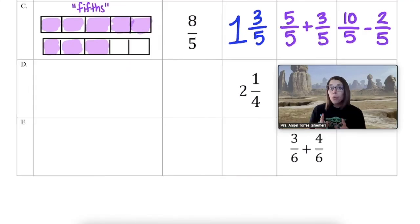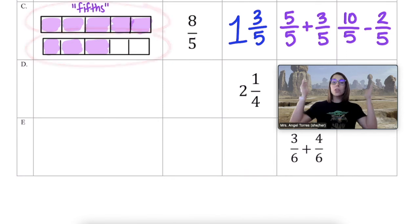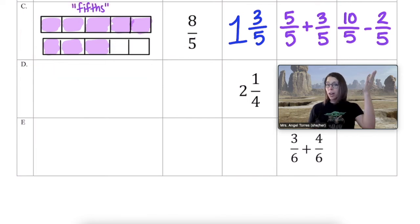Great job. Now I do want to let you know, these are not the only correct answers. There's a lot of different ways to group these together. The way I thought about it is I saw a group of five fifths and a group of three fifths. So those are my fractions that I added together. And for the difference, I saw that there were ten fifths total and two that were not filled in. That's where I ended up with ten fifths minus two fifths.